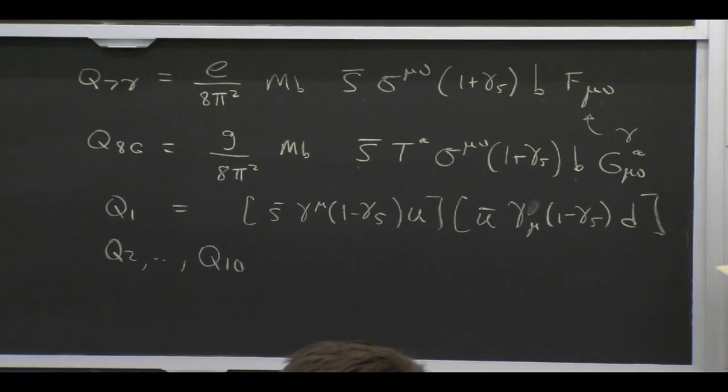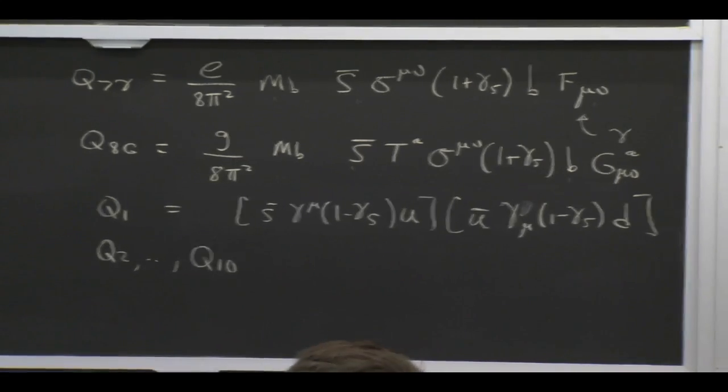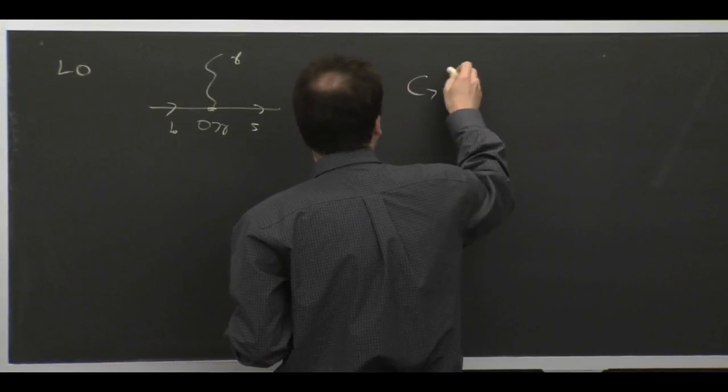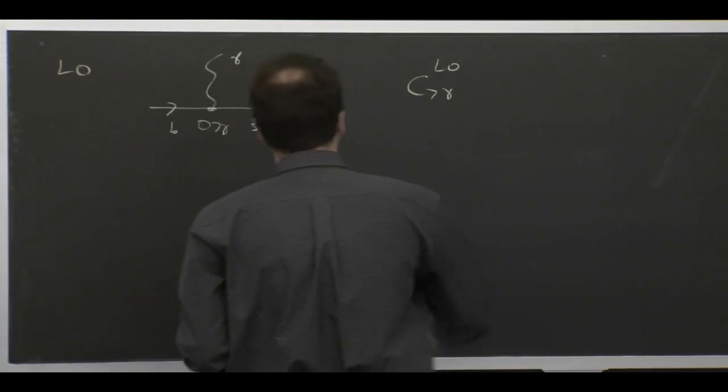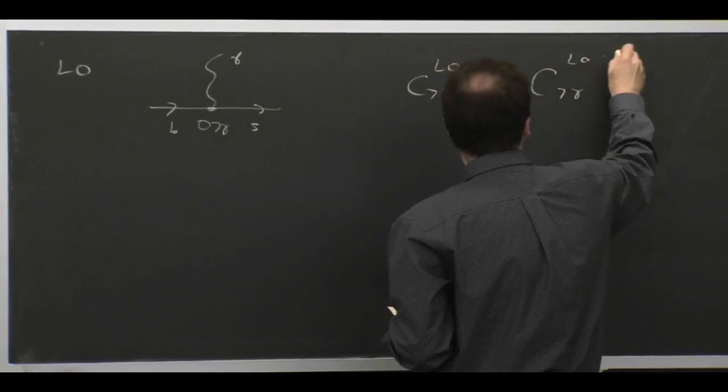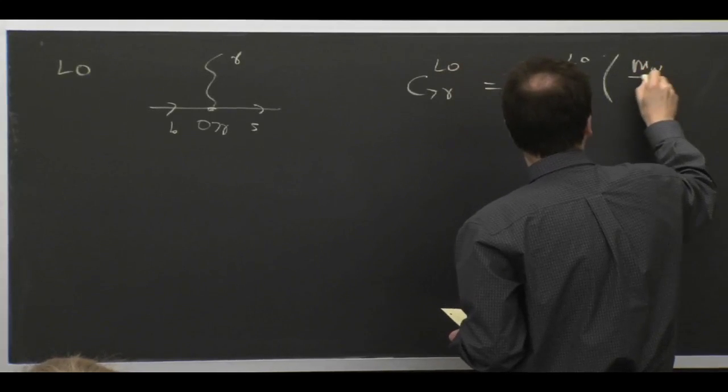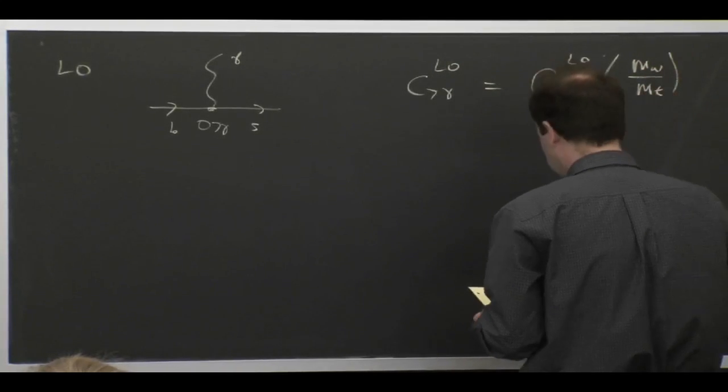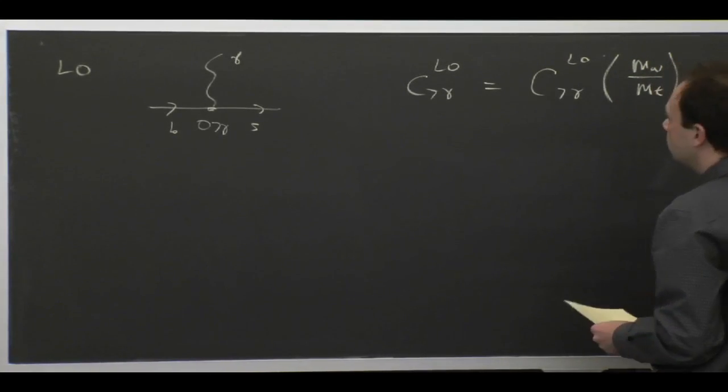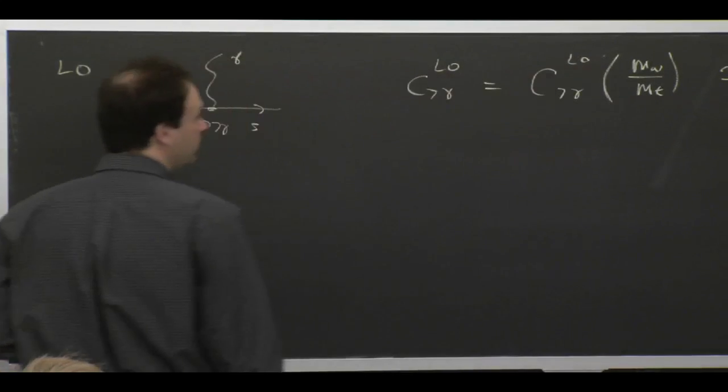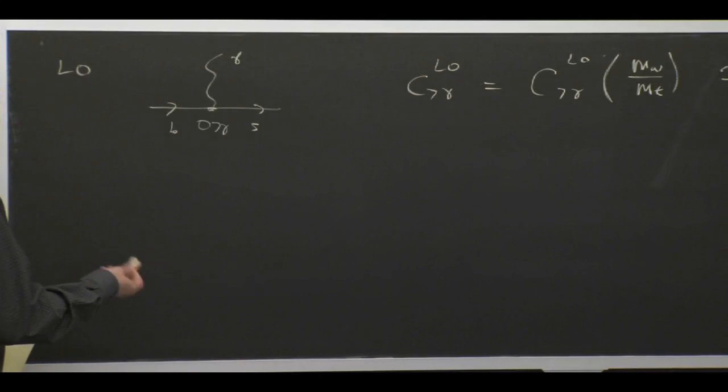So in our effective theory, we have just an operator that does this, which is this Q7γ. And if you think about what C7γ is at lowest order, well, it's just calculate that diagram over there. And the result from doing that will be some function of MW over M top, because those are the things that are appearing in the loop. And if you do that calculation, you get a number like that if you stick in values from M top and MW.